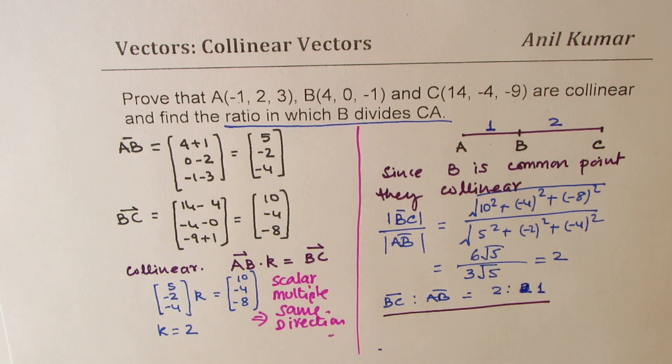So whenever we have two collinear vectors, then the three points involved, one of them will be in between the two. So it will internally divide the whole segment in some ratio, m is to n. And that is how we could calculate.